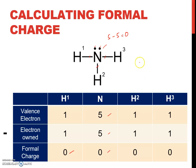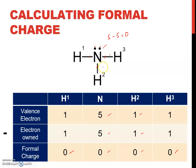For hydrogen number 2: 1 valence electron minus 1 electron owned by its atom gives 0 formal charge, since hydrogen is in group 1. For hydrogen number 3, it's the same: 1 valence electron minus 1 electron owned equals 0. So all atoms in the ammonia molecule have 0 formal charge, meaning this Lewis structure is very stable.